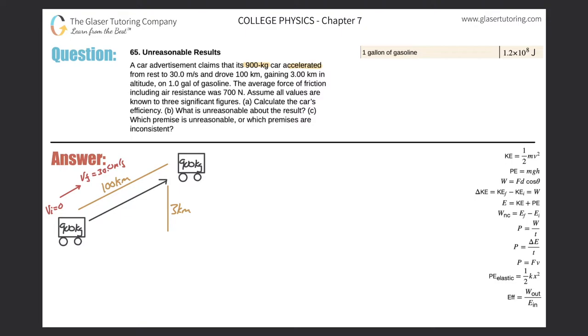A car advertisement claims that its 900 kilogram car accelerated from rest to 30 meters per second and drove 100 kilometers, gaining three kilometers in altitude on one gallon of gasoline. The average force of friction, including air resistance, was 700 newtons. Assume all values are known to three significant figures. Letter A: Calculate the car's efficiency. Let's first start with that.